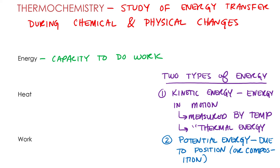Going back to energy as the capacity to do work — to really understand that, we need to talk about how energy is transferred. From Gen Chem 1, we know the law of conservation of energy: energy can't be created or destroyed, it's transferred. Energy can be transferred from one type to another or one form of kinetic energy to another. It turns out there are two ways to transfer energy: heat and work.